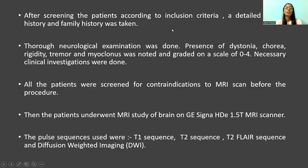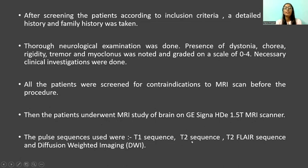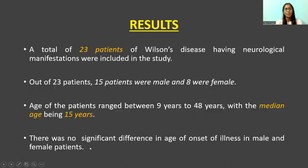After screening the patients according to inclusion criteria, a detailed clinical history and family history was taken, thorough neurological examination was done, and all patients were screened for contraindications to MRI before the procedure. The patients then underwent MRI study of brain on a G.E. Signa HTE 1.5 tesla MRI scanner. The pulse sequences used were T1 sequence, T2 sequence, T2-weighted FLAIR sequence, and diffusion weighted imaging.